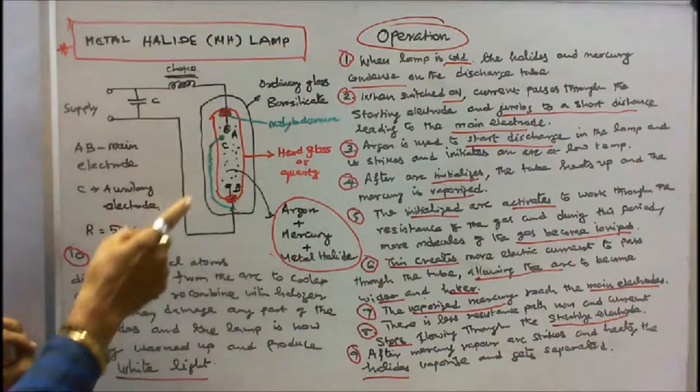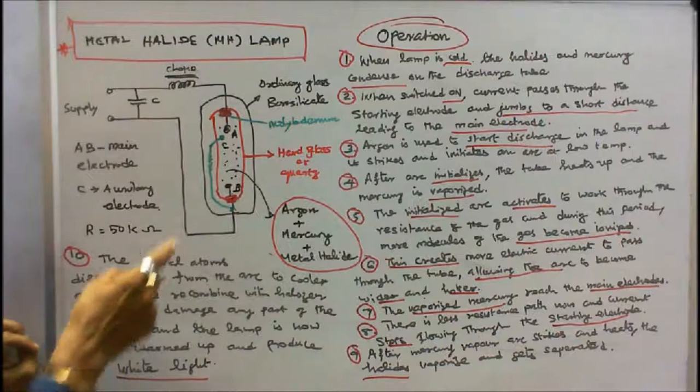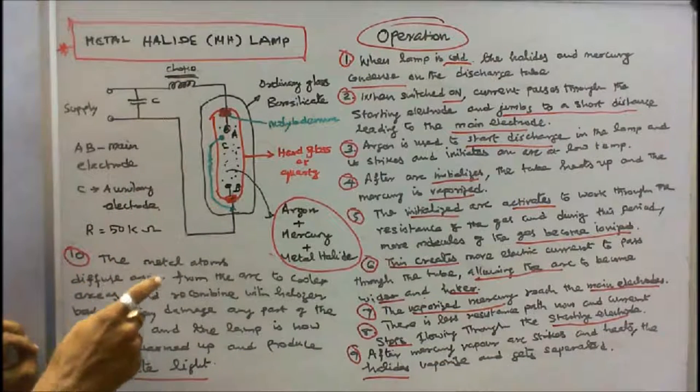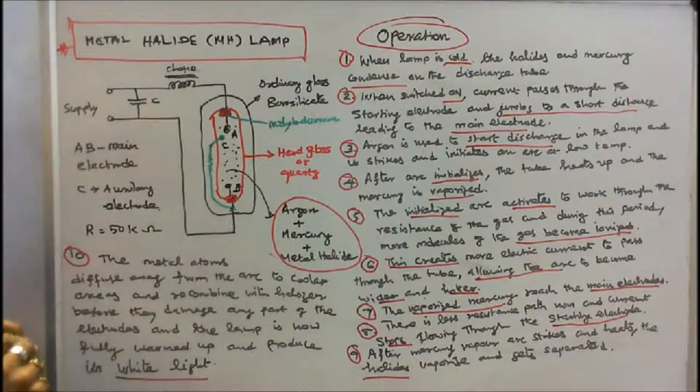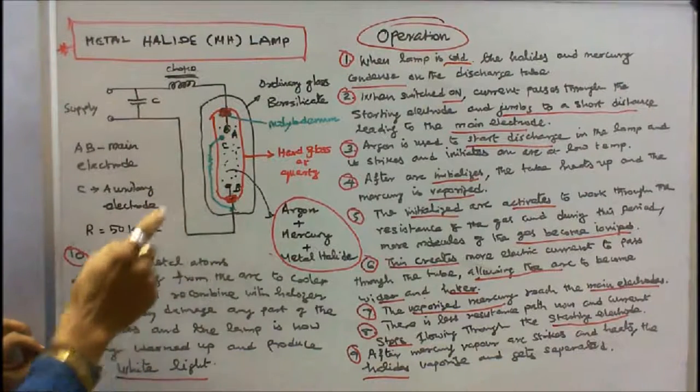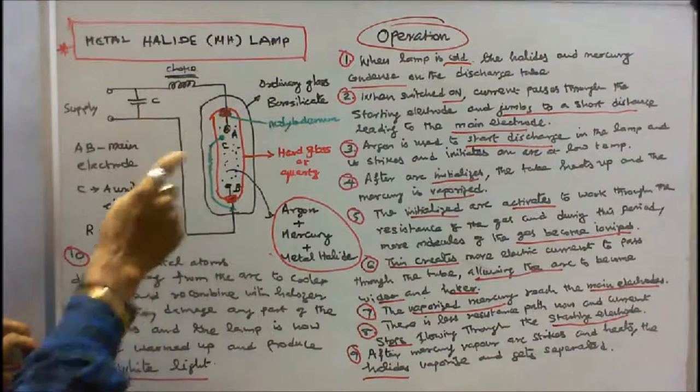The initialized arc activates and works through the resistance of the gas. During this period more molecules of the gas become ionized. This creates more electric current to pass through the tube, allowing the arc to become wider and hotter.